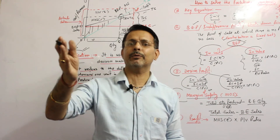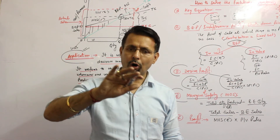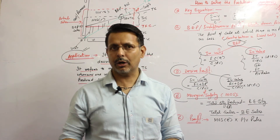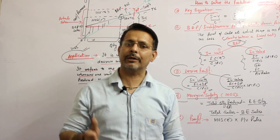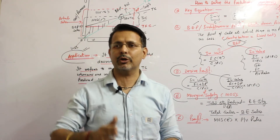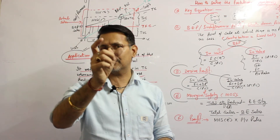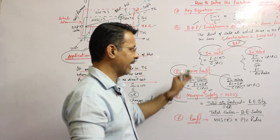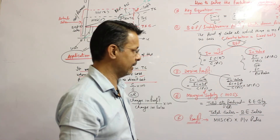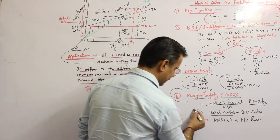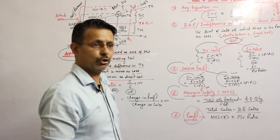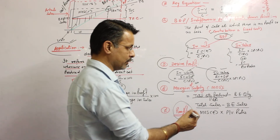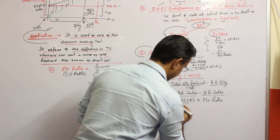After the break-even point, all the area is known as margin of safety, and it depends on your goals and desired profit. This is not the desired profit — this is the actual profit which comes through the margin of safety.